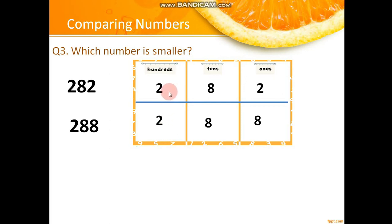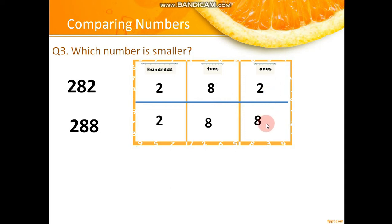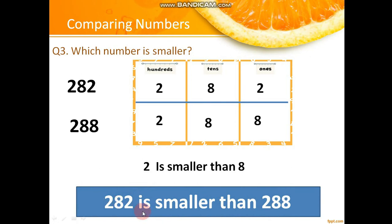Start comparing from hundreds place — both have 2, so they are the same. Move to tens place — both have 8, they are also the same. Move to ones place — there is 2 in the first number and 8 in the second. Two is smaller than eight, so 282 is smaller than 288. I hope you have learned how to compare numbers without pictures.